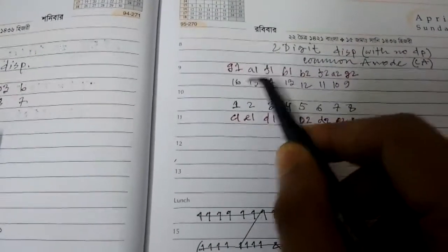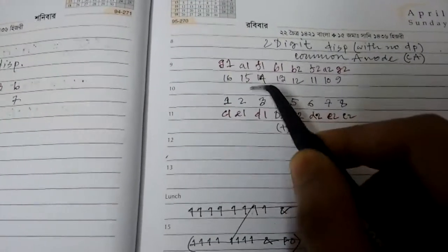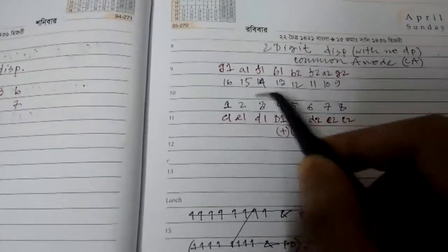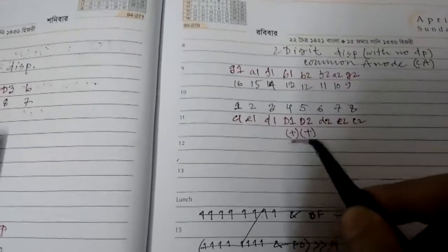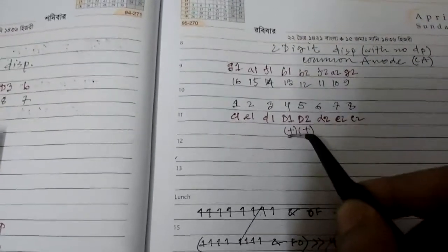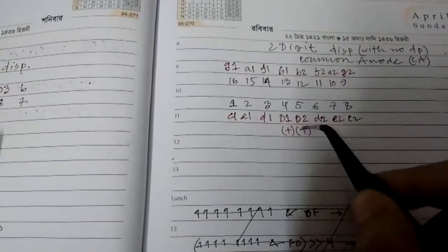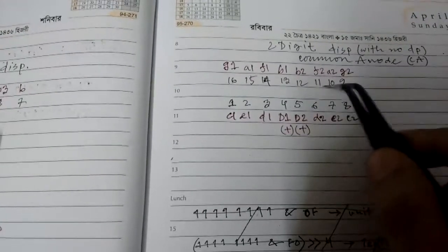And I'm toggling these to display a specific digit on the first display or the second display. So if I want to display 12, 1 and 2, I will set this one to VCC and 1 would show up. And if I toggle to D2, then I'll get the second digit, which is 2 in the case of 12.